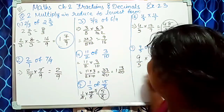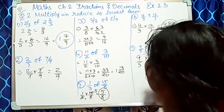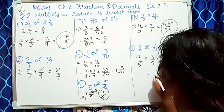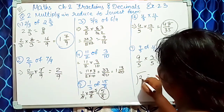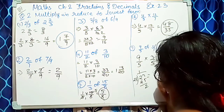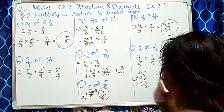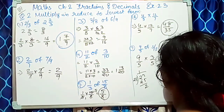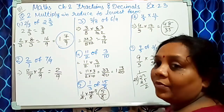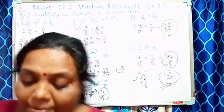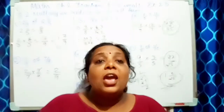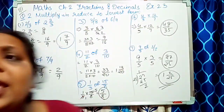27/25 — yeh bada number hai. Divide karke: 25×1=25, 27−25=2, toh answer hai 1 2/25. Kitna easily multiplication bata diya — reduce form se lowest form lana bahut easy hai!